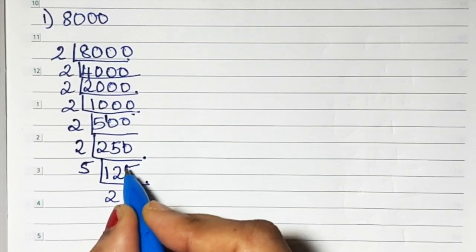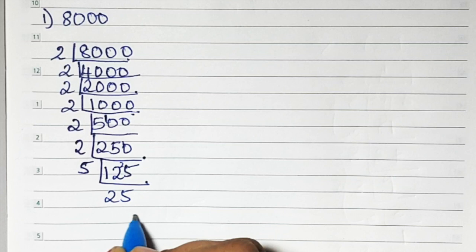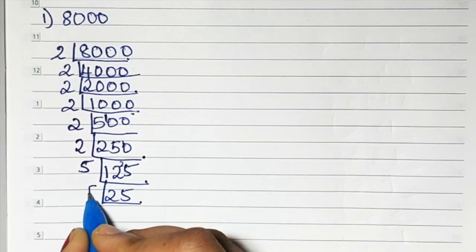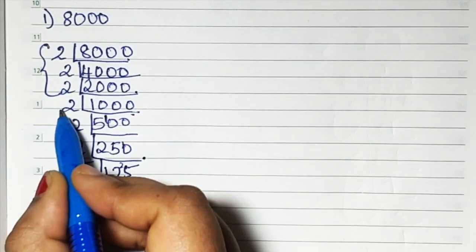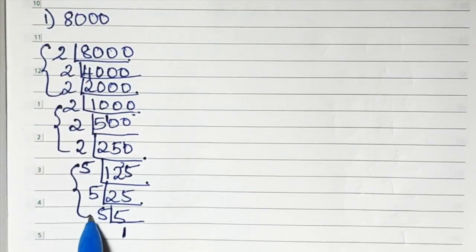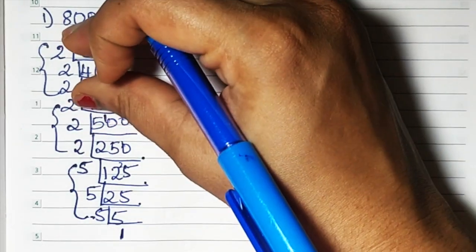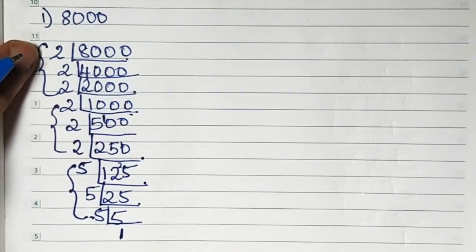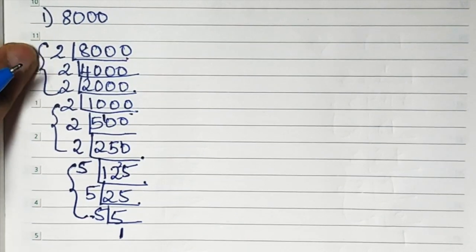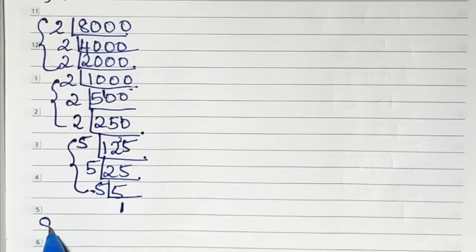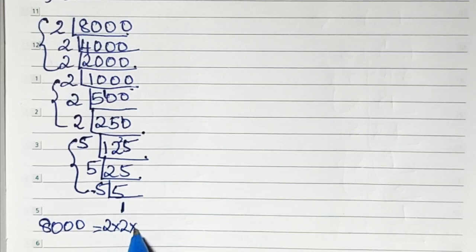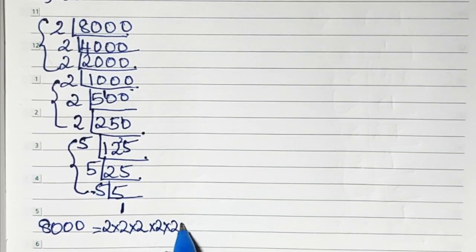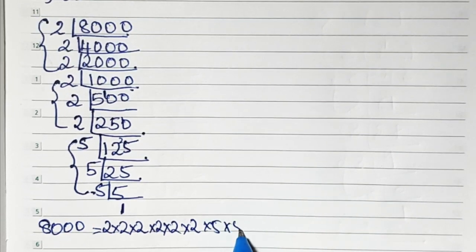I know the cube root of 125 is 5, so I can take 5 directly. We have 3 groups with 3 numbers in each group. You have to see that the same similar numbers are there in each group — you can't mix different numbers. Same number you have to take thrice. So the factors of 8000 are 2 × 2 × 2, then again 2 × 2 × 2, then 5 × 5 × 5.